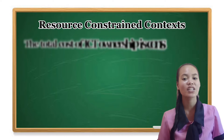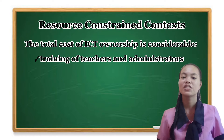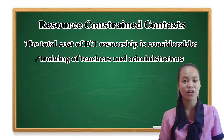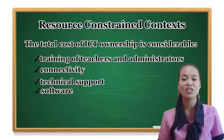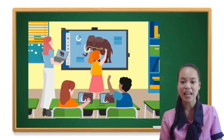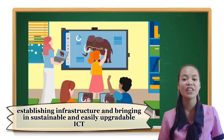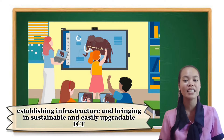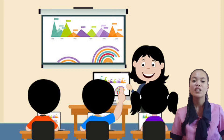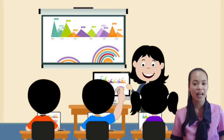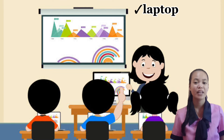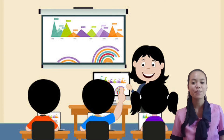Resource-constrained contexts. The total cost of ICT ownership is considerable, including training of teachers and administrators, connectivity, technical support, and software, amongst others. When bringing ICT into classrooms, policies should use an incremental pathway establishing infrastructure and bringing in sustainable and easily upgradable ICT. Schools in some countries have begun allowing students to bring their own mobile technology such as laptop, tablet, or smartphone into class rather than providing such tools to all students.